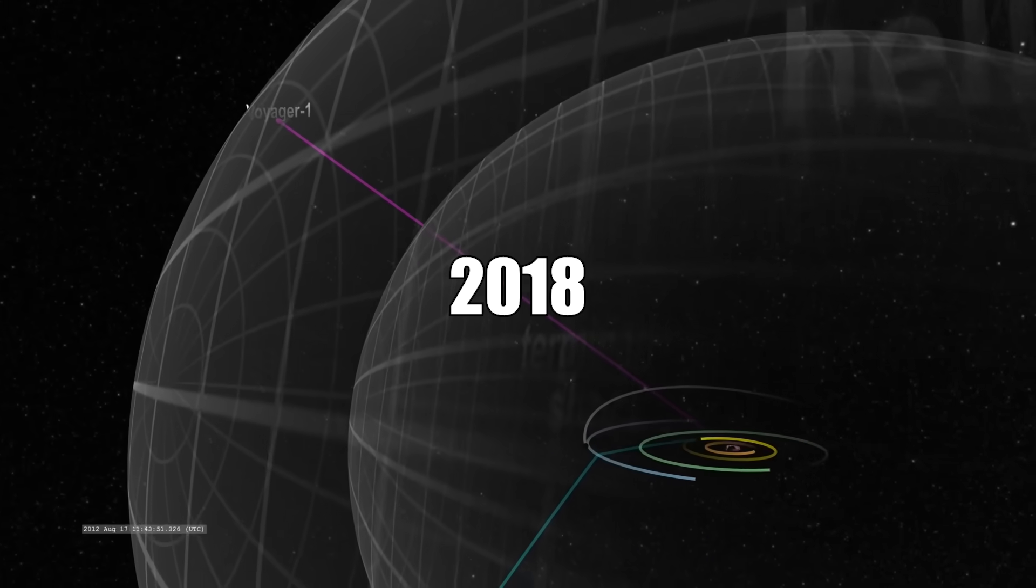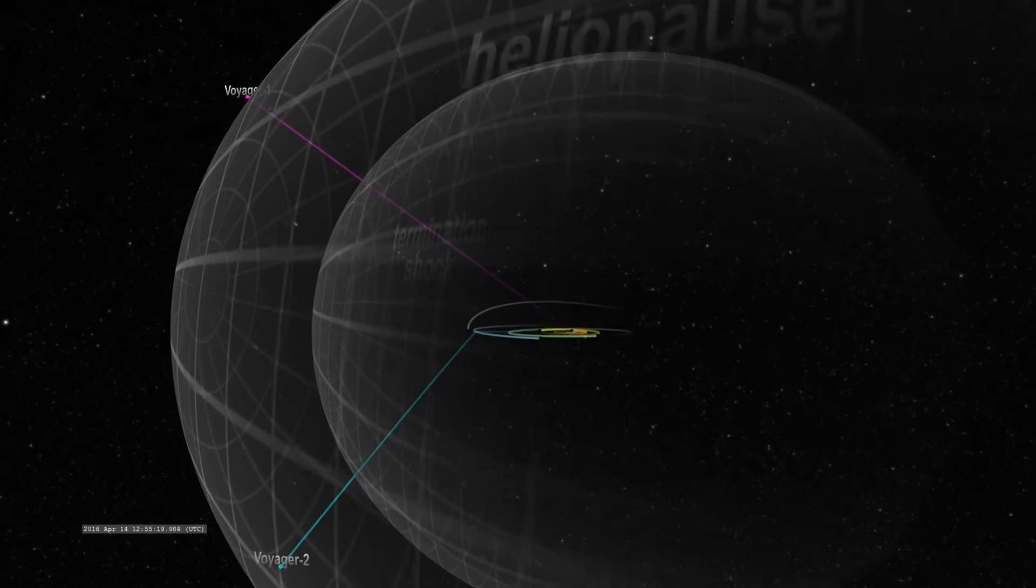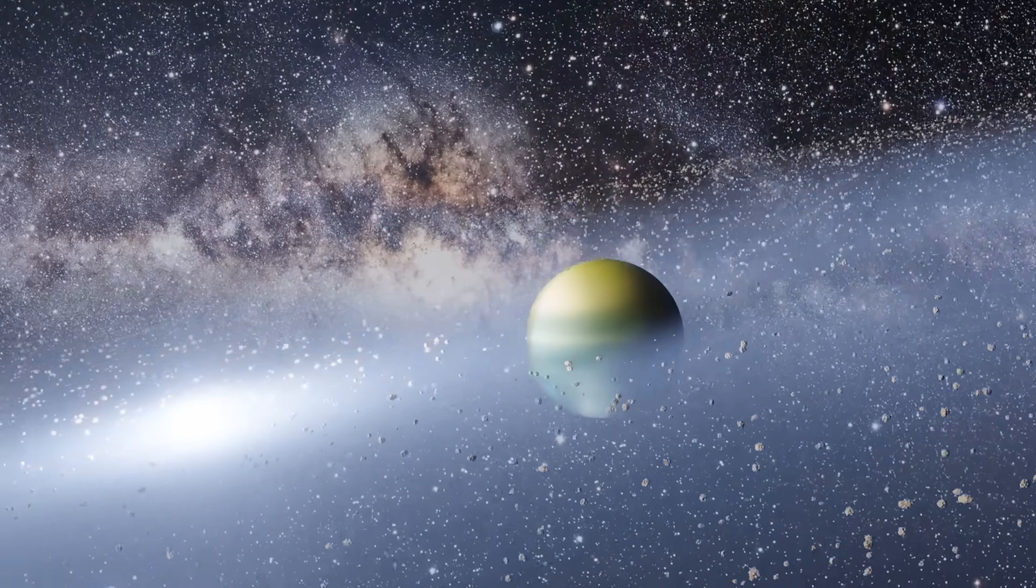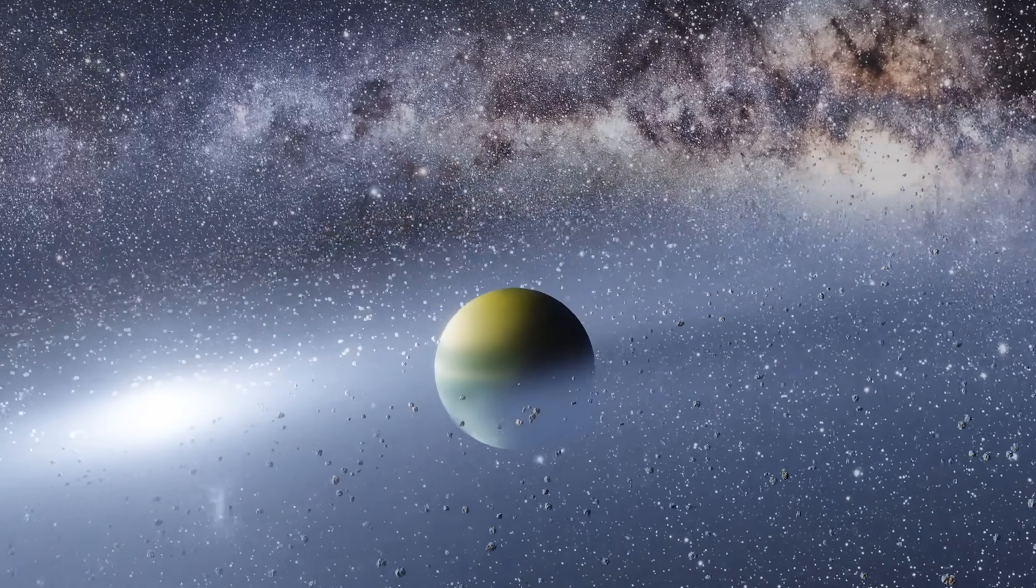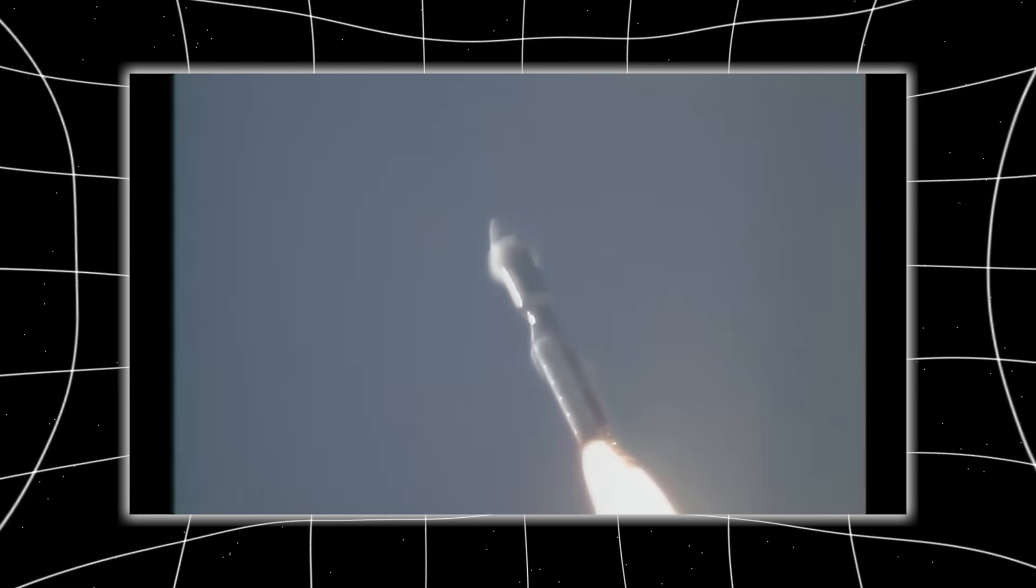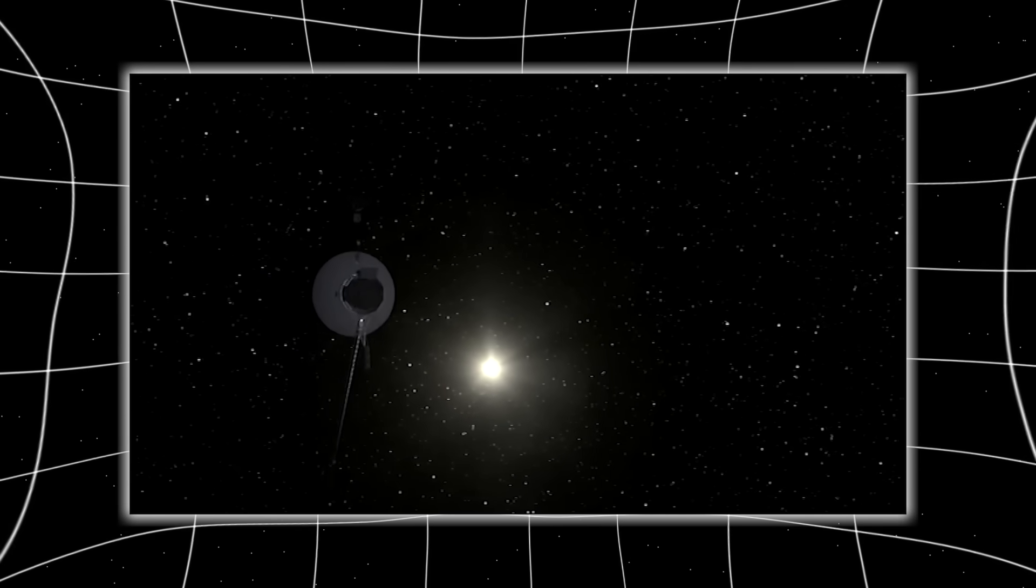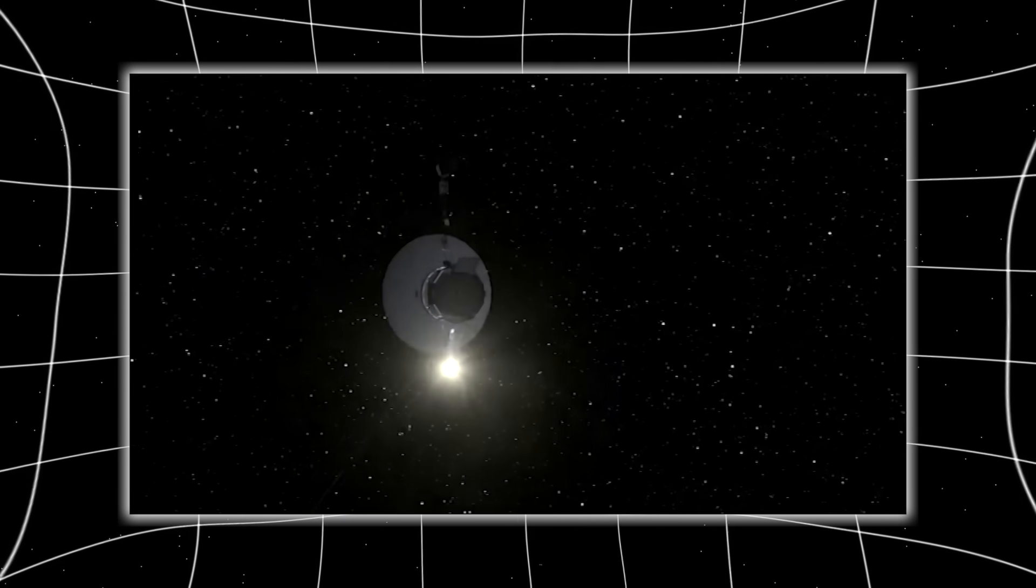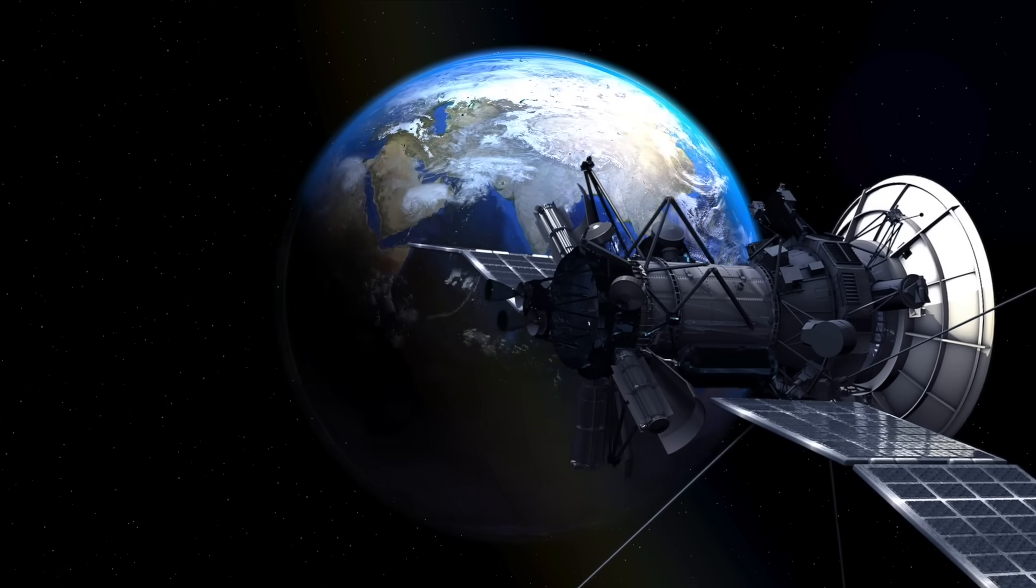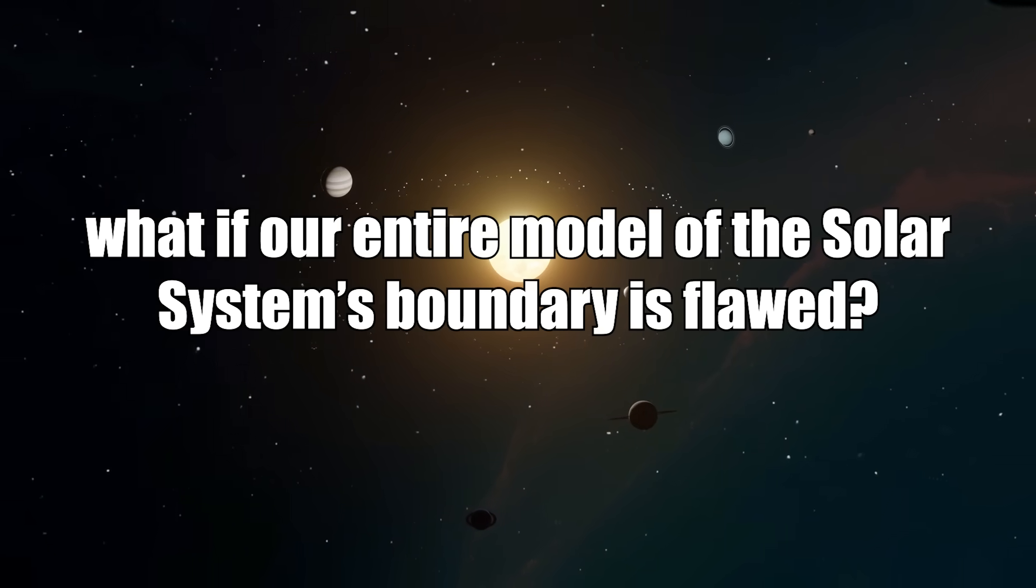In 2018, Voyager 2 crossed the heliopause at almost the exact same distance, 120 astronomical units. And once again, the magnetic field didn't change direction. Two spacecraft, six years apart, both contradicting decades of heliospheric models. If the theories were correct, the probes should have detected different magnetic field orientations, but both recorded the same one. This repetition of the anomaly transformed a single puzzle into a terrifying possibility. What if our entire model of the solar system's boundary is flawed?